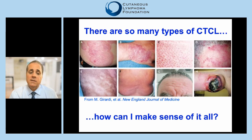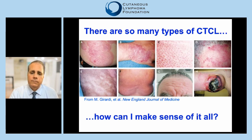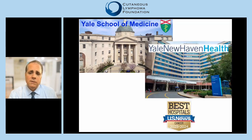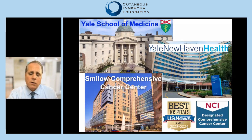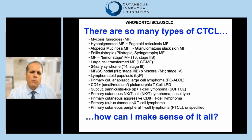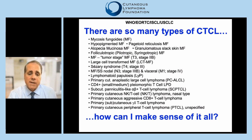There are so many types of cutaneous T-cell lymphoma, and for a patient and their doctors, it can be daunting. You may have seen some of these names and wondered what type you have, what it means to have one particular type versus another. Figuring out that subtype is the first part of making sense of your CTCL, as each one presents, manifests, and acts differently over time, and they're treated differently very often as well.